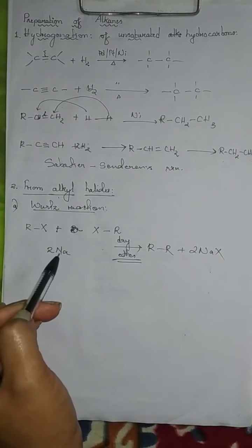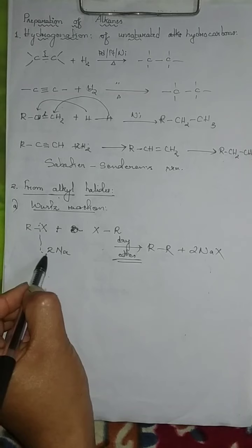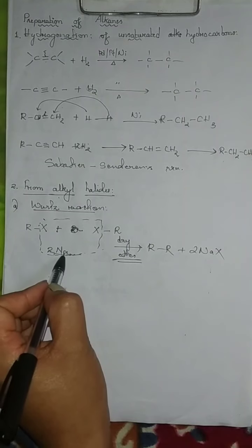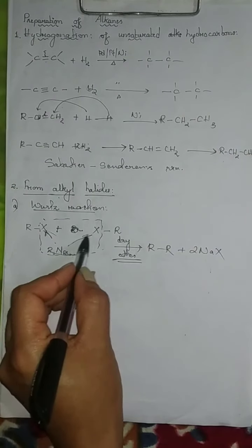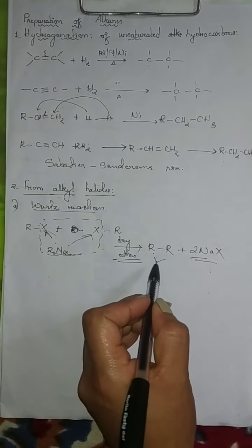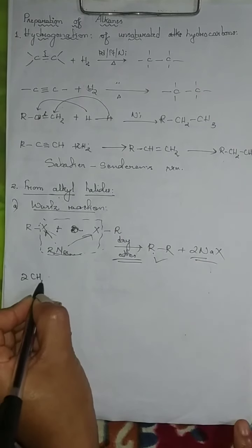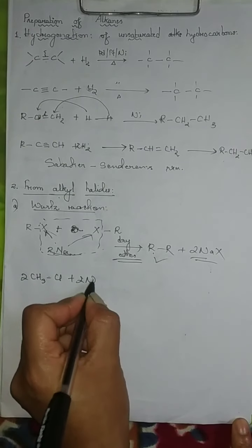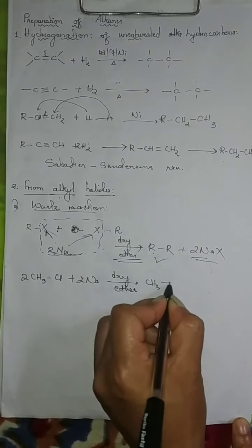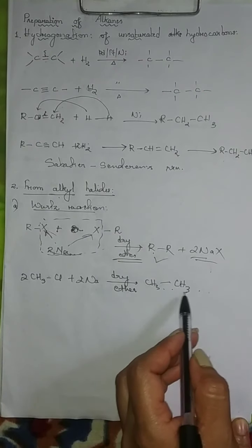In the Wurtz reaction, two haloalkanes react with two molecules of sodium metal. The two halogen atoms leave along with the two sodium atoms — each sodium takes one halogen — resulting in removal of two NaX and formation of the alkane product. For example, two molecules of methyl chloride react with sodium in the presence of dry ether to give ethane.